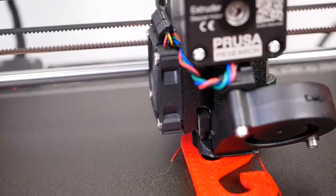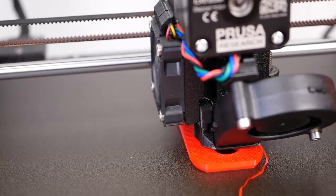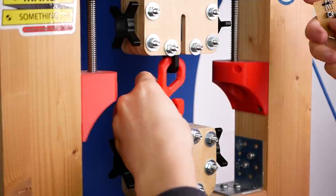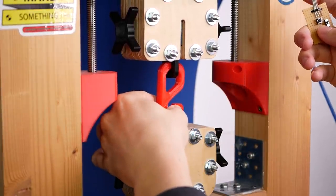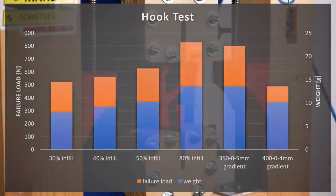For the hook, I also printed a couple of different infill ratios and then applied gradient infill to the one with 25% infill. I then tested all of them on my DIY universal test machine where unfortunately I didn't find any significant improvement over just increasing the infill ratio.